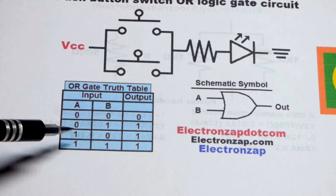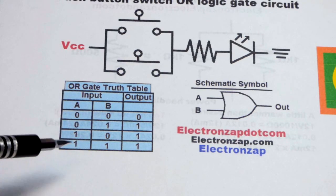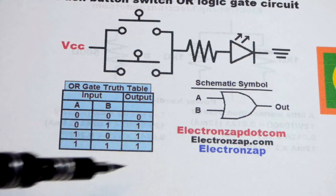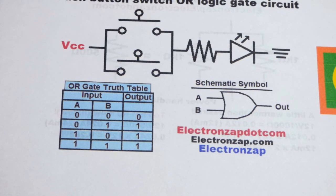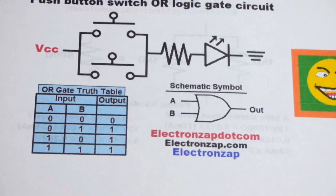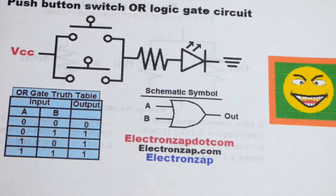If any of them are on, or more than one of them are on, the output is on. The LED is on. And here is the schematic symbol.